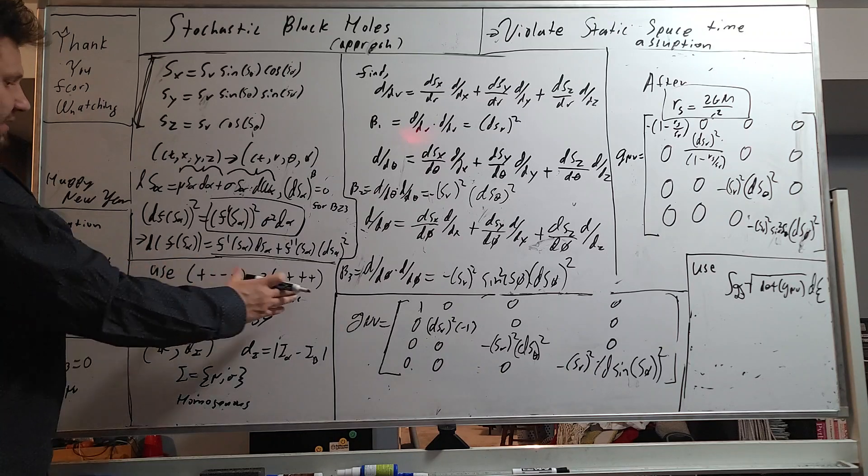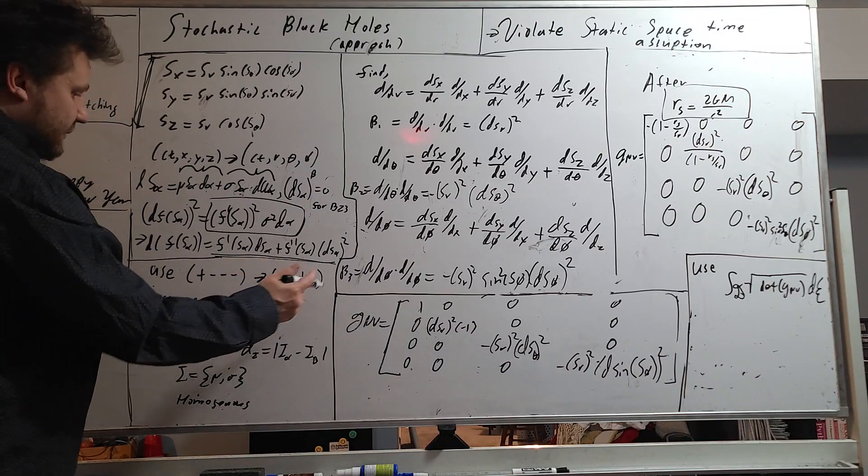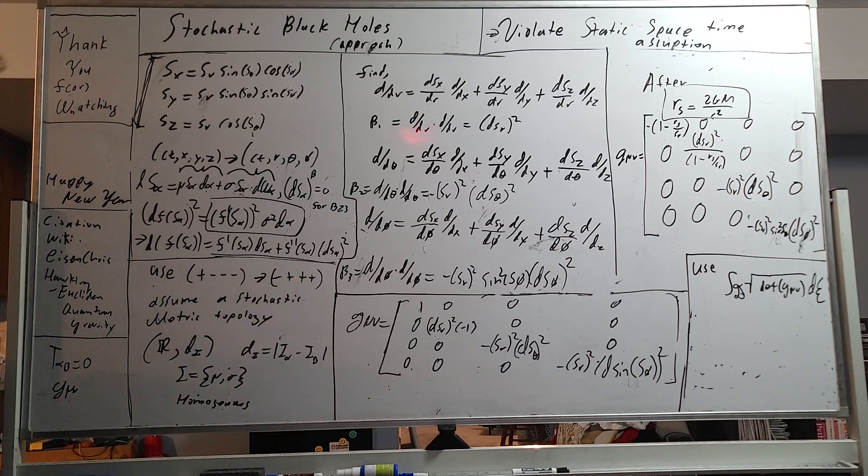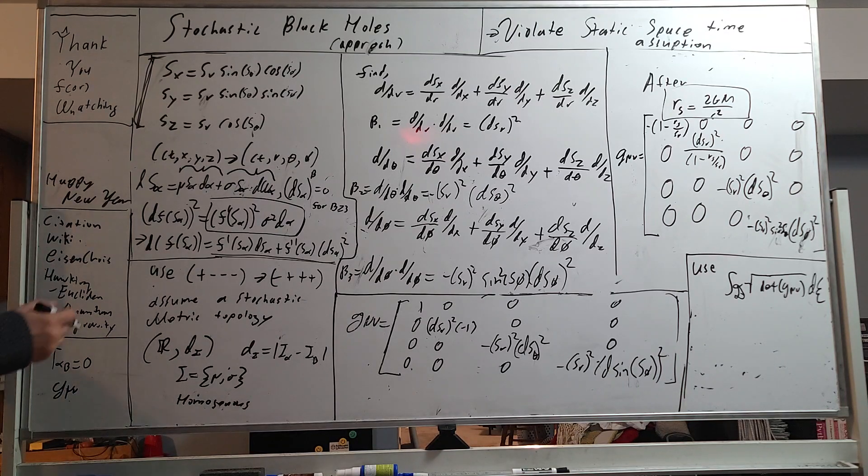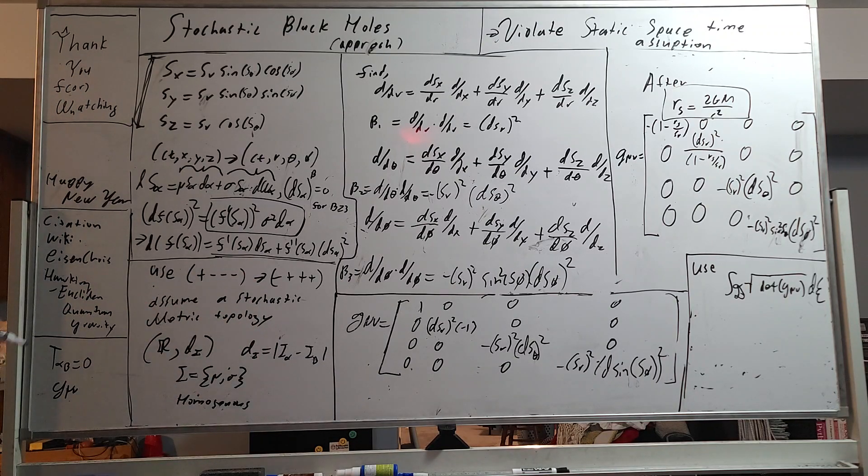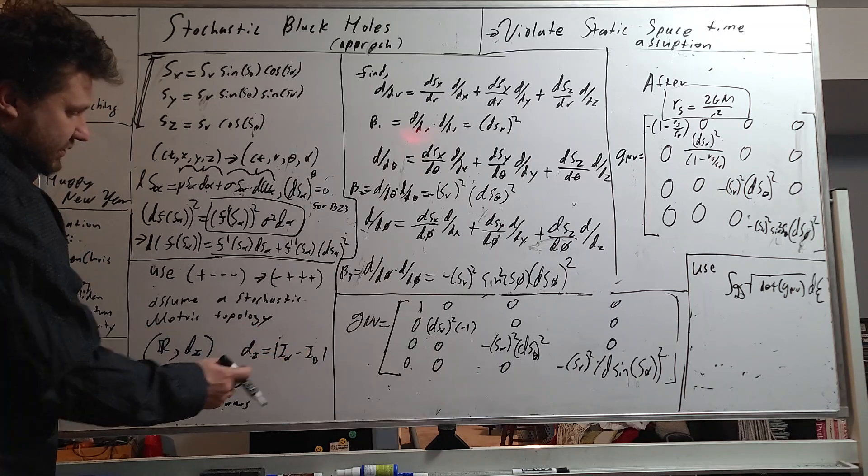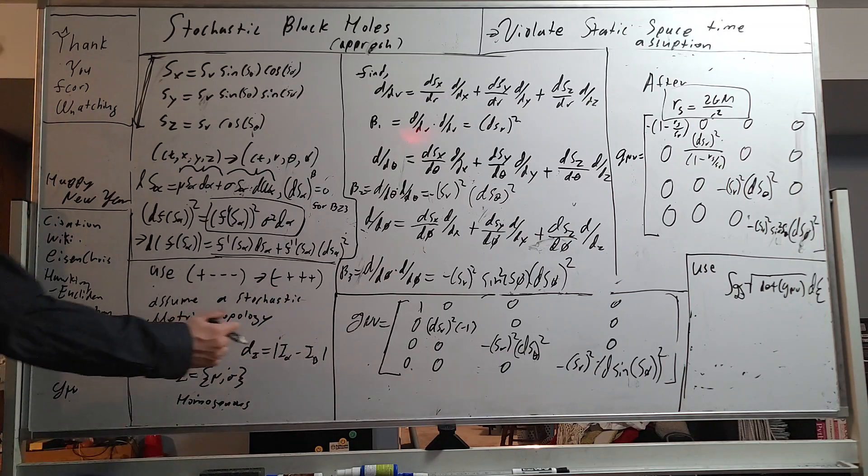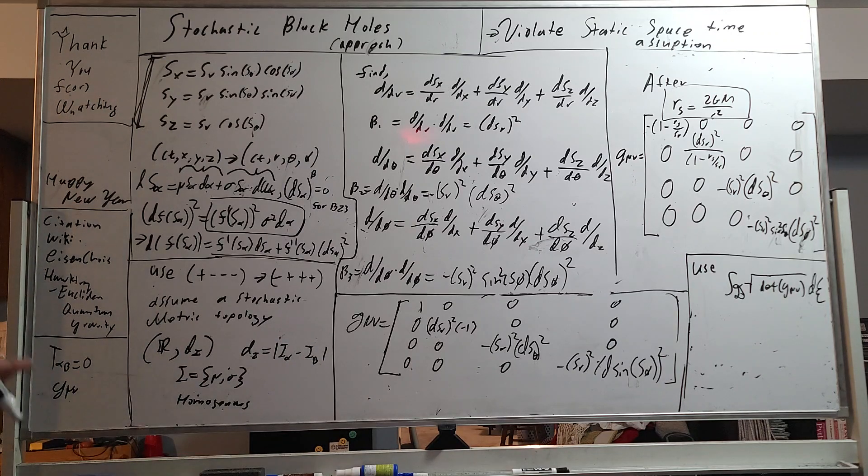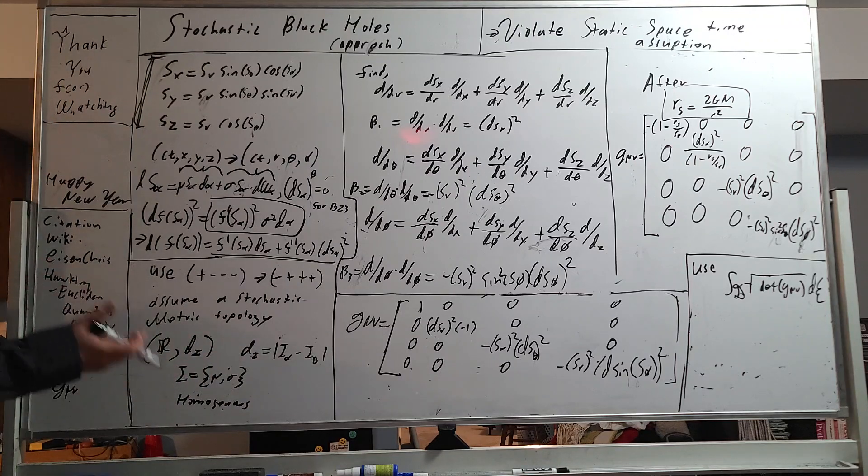So, classically, in the Schwarzschild solution, we use plus, minus, minus, minus, and then go to minus, plus, plus, plus. This is something called the Minkowski metric. Now, what we're going to do is we're going to assume that we're doing this Einstein field equation and all this math on a certain topology, particularly a stochastic metric topology. So, here we have the reals, and we have this d sub i, where this is the distance function. And d sub i is essentially equal to the absolute value of the difference between two general Ito processes. They need not be exactly the same Ito process, but in this case, they are.